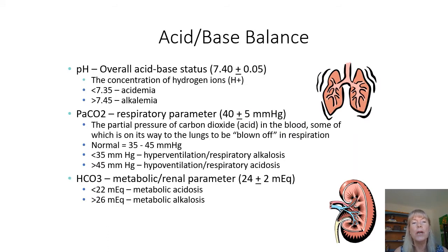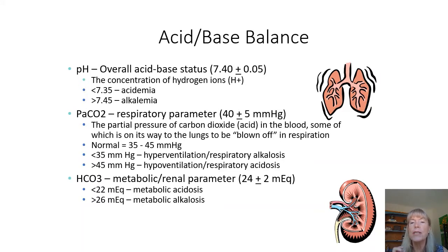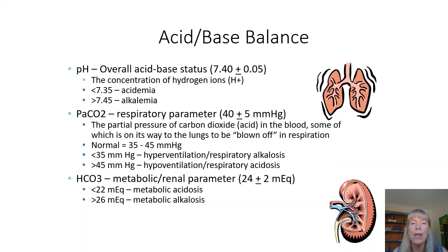When we talk about acid-base balance, we need to know some values. The first one is pH — the body wants to be about 7.40 plus or minus 0.05, so very tight control. You have acidemia if your pH is less than 7.35, or alkalemia if your pH is greater than 7.45.